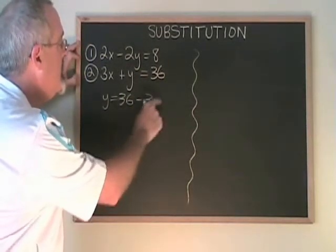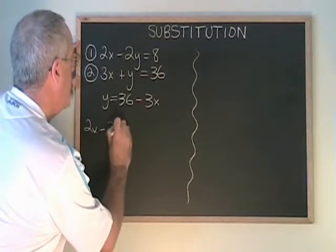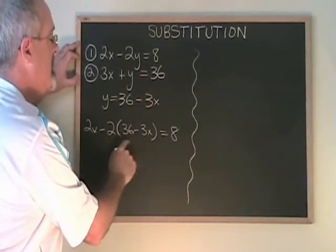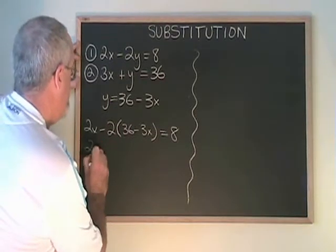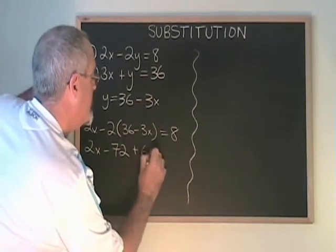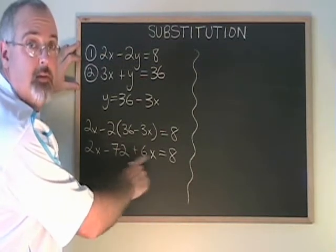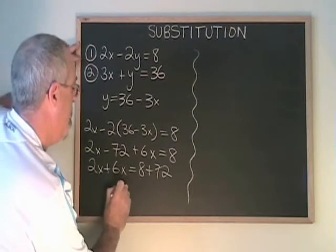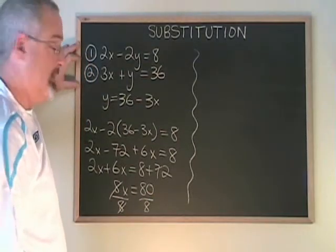Then I substitute this expression that y is equal to into the y position in the other equation. I get 2x minus 2, open bracket, 36 minus 3x equals 8. My y has been replaced with the expression y is equal to. Now we have an equation that only has x's and I can solve for x. Negative 2 times 36 is minus 72. Negative 2 times negative 3x is plus 6x. If I get all of the x's to the left and all of the constant terms to the right, I have 2x plus 6x equals 8 plus 72. 8x is equal to 80. Divide both sides by 8, and x is equal to 10.